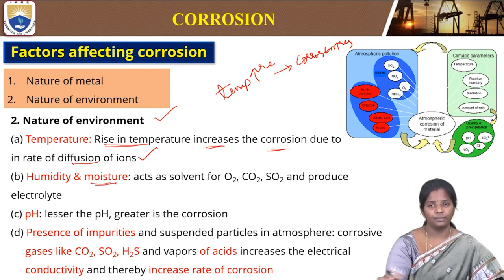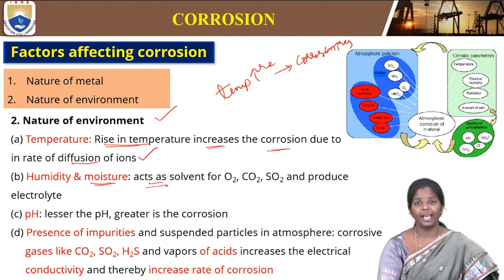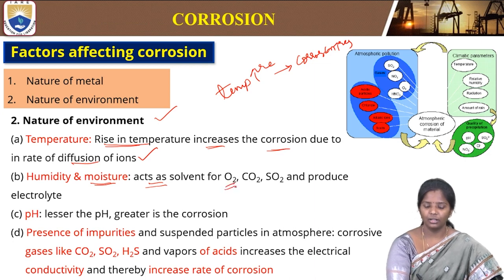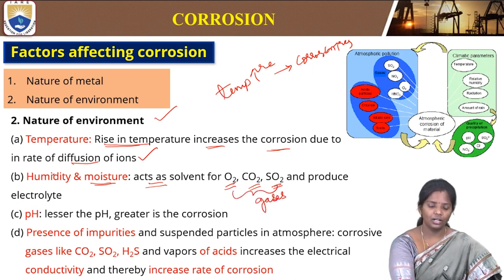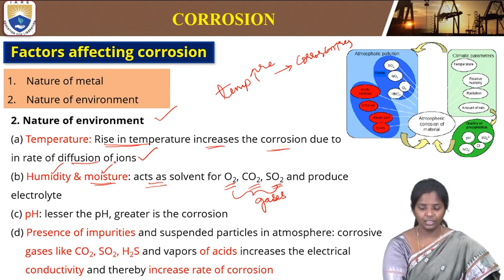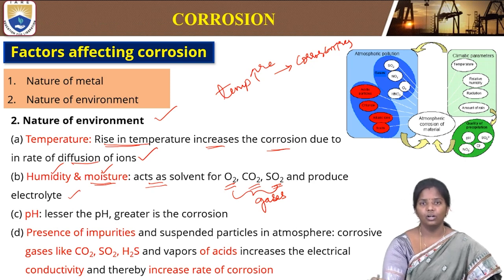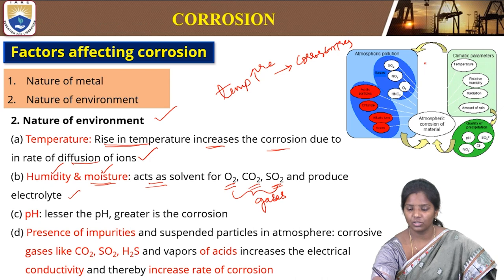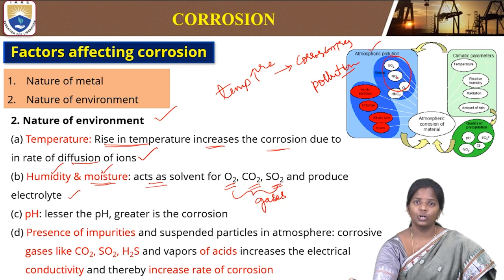Then humidity and moisture — this humidity and moisture will act as a solvent for carbon dioxide, oxygen, and sulphur dioxide. For these gases, moisture and humidity will act as solvent and produce electrolyte. In the presence of all these materials, the metal will undergo corrosion. As we see from this figure, all these gases come from atmospheric pollution, and pollution causes these gases to help in corrosion.